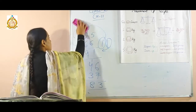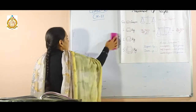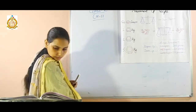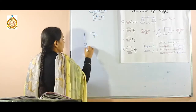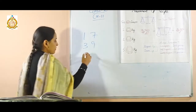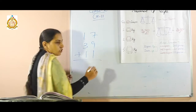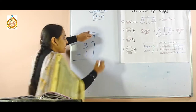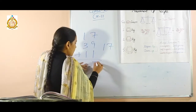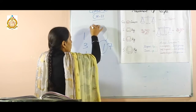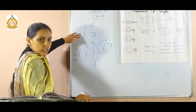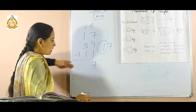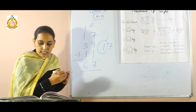Next sum is when 3 statements are given and how you can add these. For example: 17, 39, and 11. First of all, add the right hand side — 9 plus 1 is 10, plus 7 is 17. So write down 7 here and shift 1 to the left. 1 plus 1 is 2, plus 3 is 5, plus 1 is 6. That means 67 is the answer.